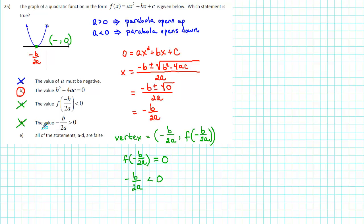Finally, the last statement, all of the statements a through d are false, is false because b is true.